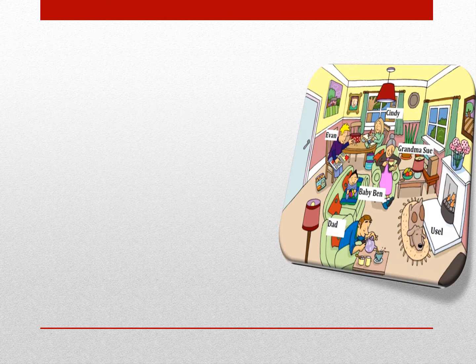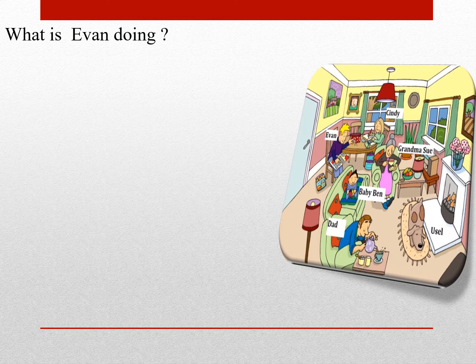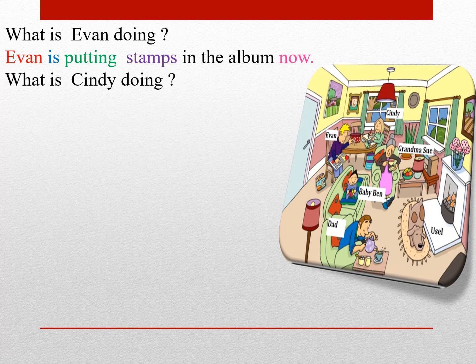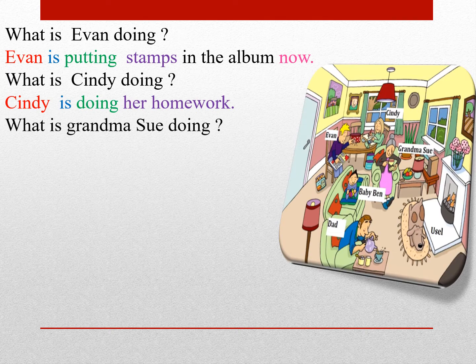حالا که میتونیم هم سؤال کنیم و هم جواب بدیم، چه در قالب جملات مثبت چه منفی، در مورد تک تک اینها میپرسیم و جواب میدیم. What is Ivan doing؟ Ivan is putting stamps in the album now. What is Cindy doing؟ Cindy is doing her homework. What is Grandma Sue doing؟ Grandma Sue is drinking tea.